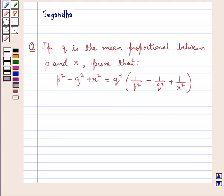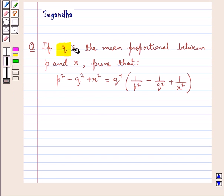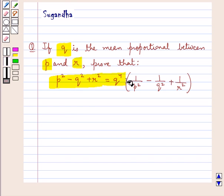Hello and welcome to the session. In this session we discuss the following question: if q is the mean proportional between p and r, prove that p squared minus q squared plus r squared is equal to q to the power 4 into 1 upon p squared minus 1 upon q squared plus 1 upon r squared, the whole.